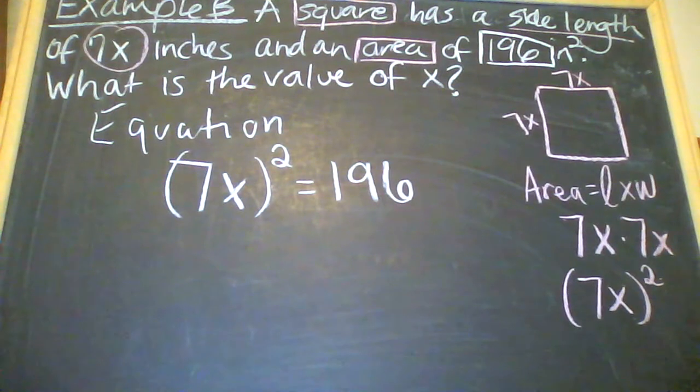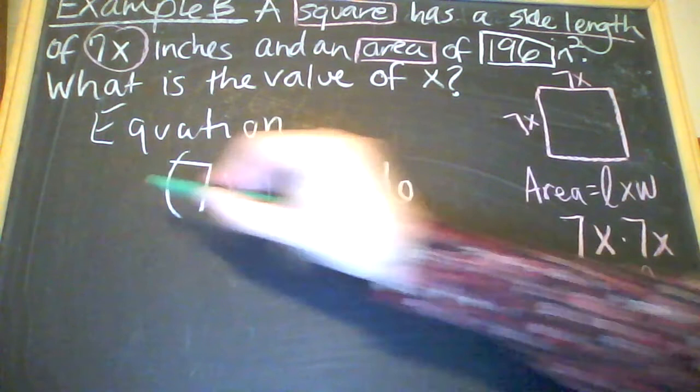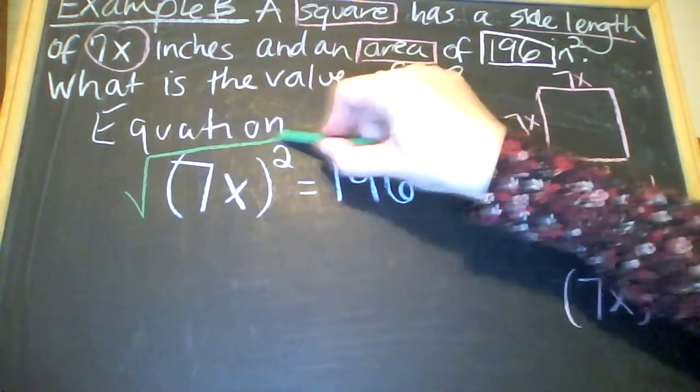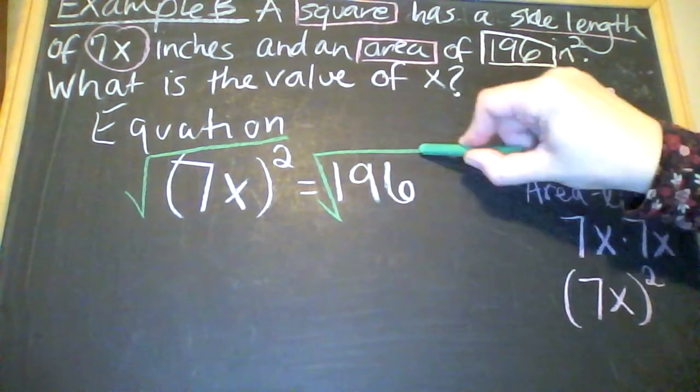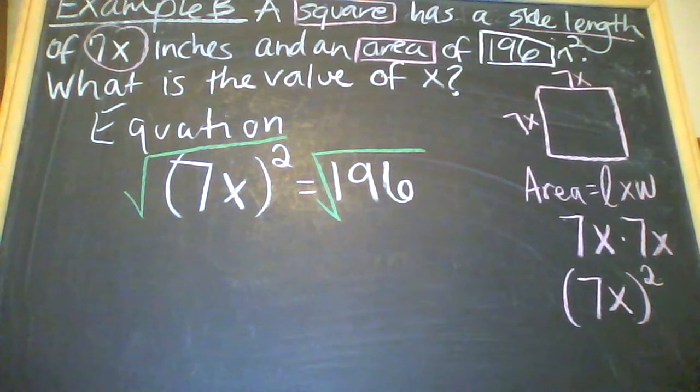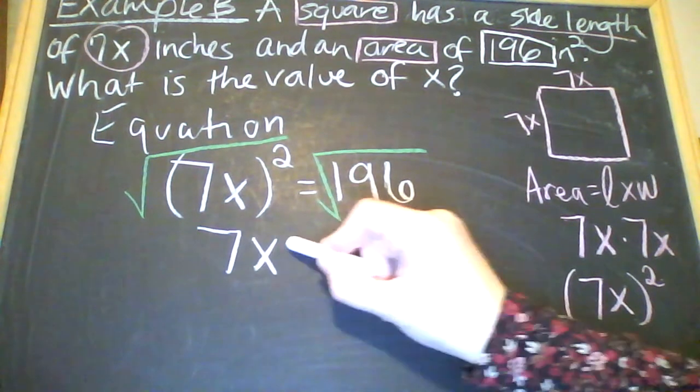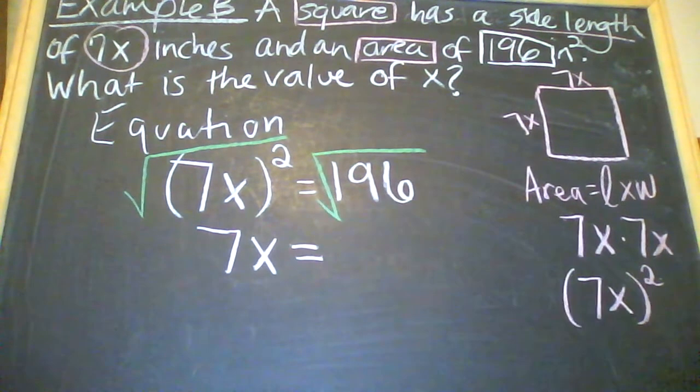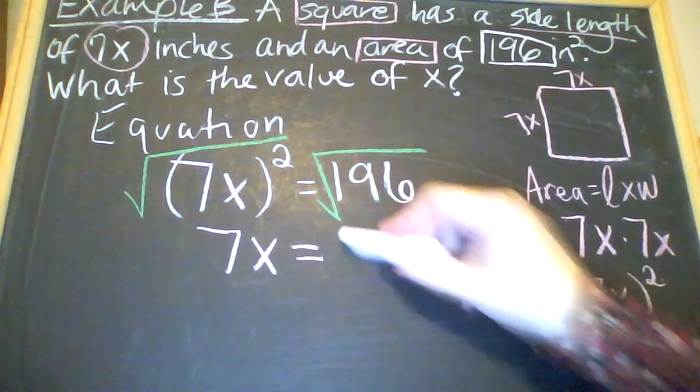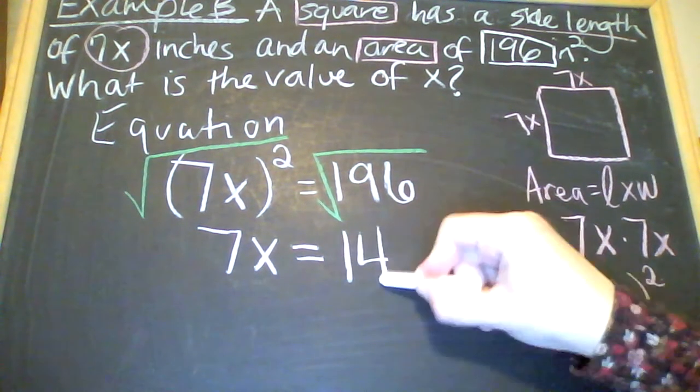So to solve this equation, to undo squaring, you take the square root. So I'm going to take the square root of both the left and the right. The square root of 7x squared is 7x. So on this side we have 7x. Bring down your equal sign. And the square root of 196 is 14. 14 times 14 is 196.